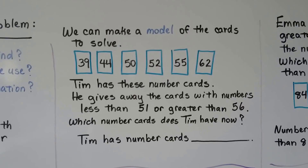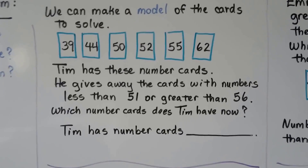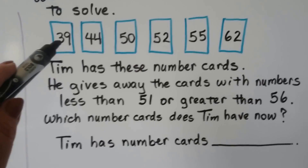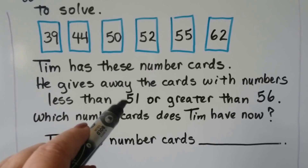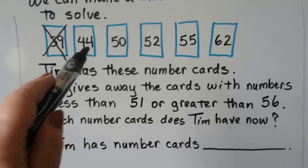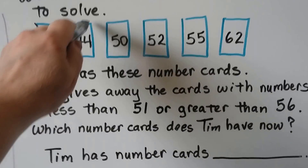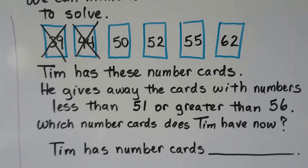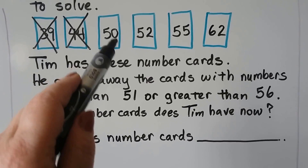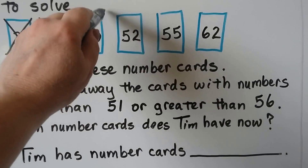We can make a model of the cards to solve. Here we have a model of the cards that Tim has. He gives away the cards with numbers less than 51 or greater than 56. Is 39 less than 51? It's got three tens and 51 has five tens — yes. Cross off the 39. Is 44 less than 51? It's got four tens and 51 has five tens — yes, 44 is less, so he gave it away. Is 50 less than 51? Both have five tens, but 50 has zero ones and 51 has one one, so 50 is less than 51 — he gave that away.